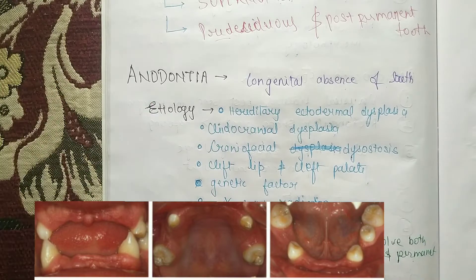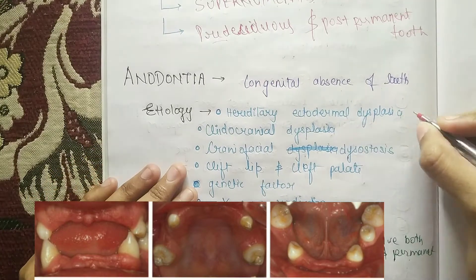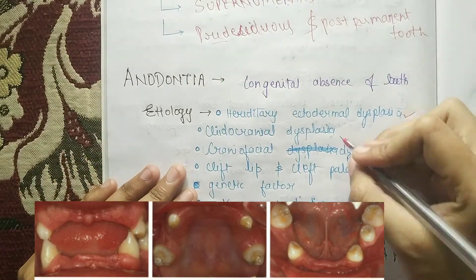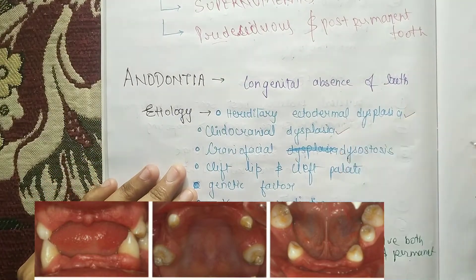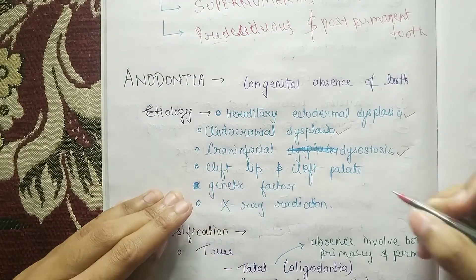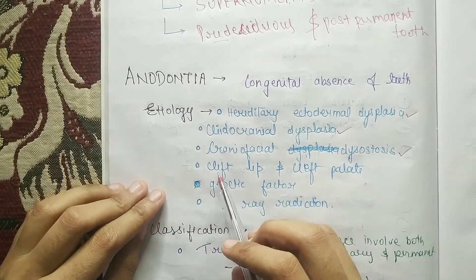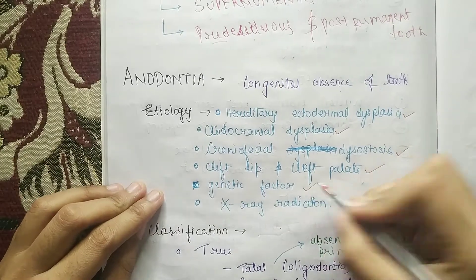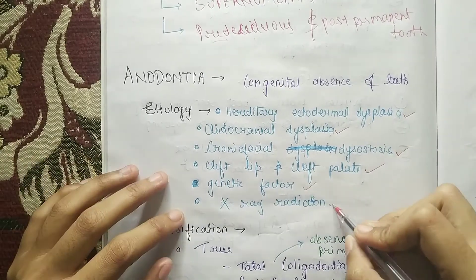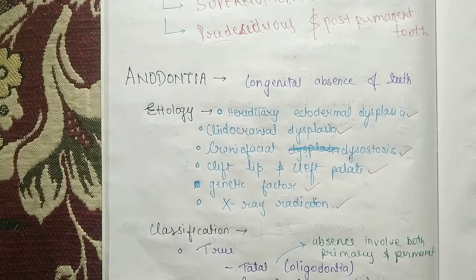There are some diseases which you have to remember. First is hereditary ectodermal dysplasia, second is cleidocranial dysplasia, third is craniofacial dysostosis, and fourth is cleft lip and cleft palate. It is also because of genetic factors.